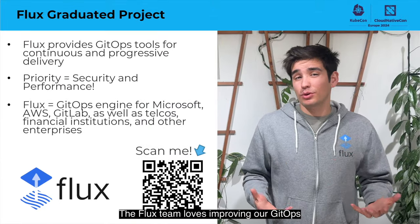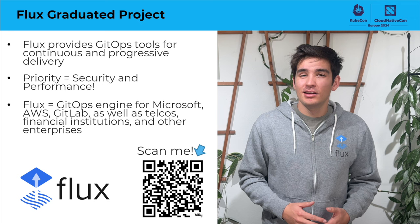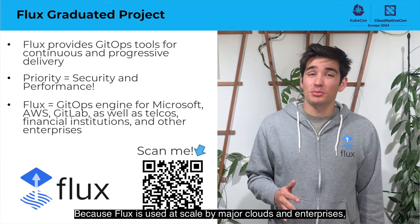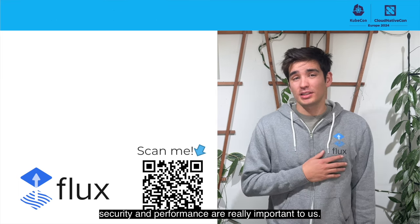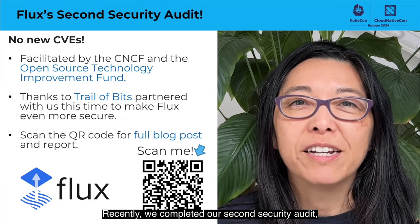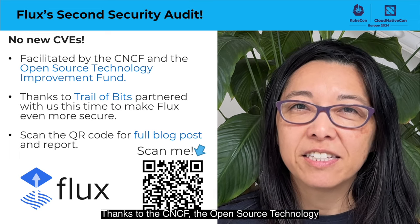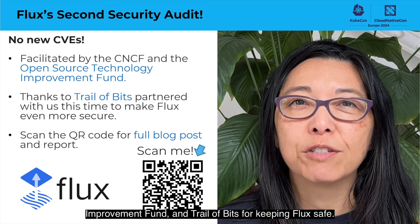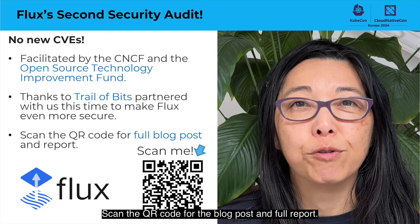Here's the Flux project update. The Flux team loves improving our GitOps tools for continuous and progressive delivery. Because Flux is used at scale by major clouds and enterprises, security and performance are really important to us. Recently, we completed our second security audit, and the big news is that there are no CVEs. Thanks to the CNCF, the Open Source Technology Improvement Fund, and Trail of Bits for keeping Flux safe. Scan the QR code for the blog post and full report.